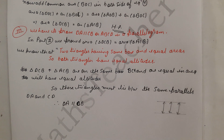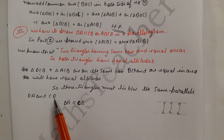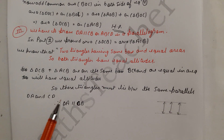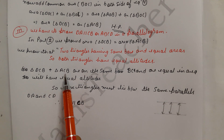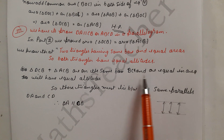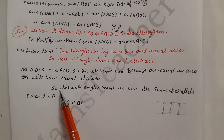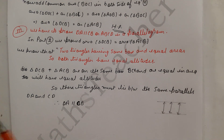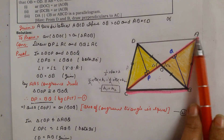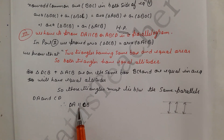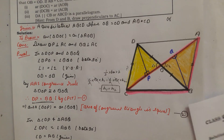That is why we write: when base, area, and altitude are all the same, this condition is fulfilled only when both lines are parallel. So we write: triangle DCB and triangle ACB are on the same base BC and are equal in area, therefore they have equal altitudes, and so these triangles must lie between the same parallels DA and BC.